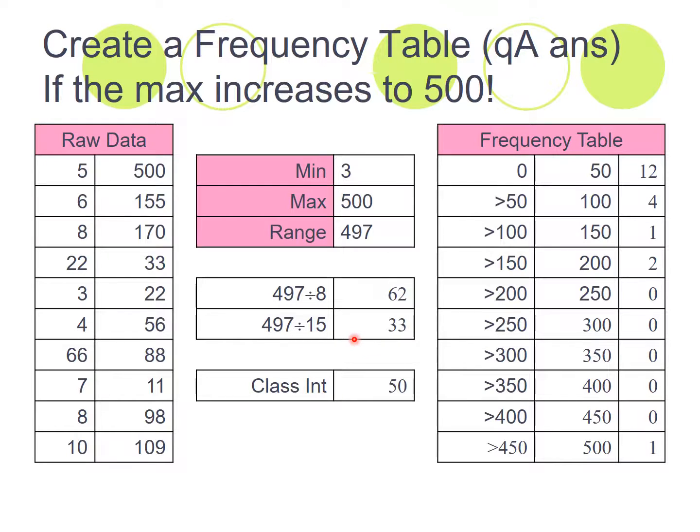Now, this one here is just showing you if the maximum, if we replace the 200 up here with a 500. You can see your range is now going to be quite different. So 500 minus 3 gives you 497. 497 divided by 8 gave us 62. 497 divided by 15 gives us 33. So what's the right nice round number between 33 and 62?